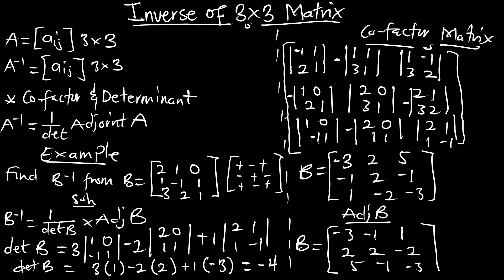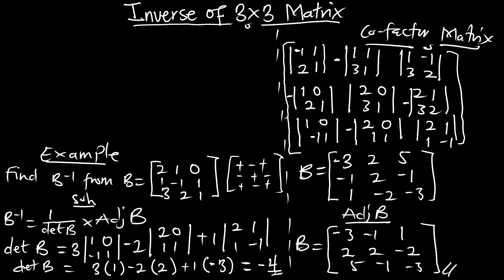So now we have our adjoint matrix, our determinant, and the adjoint. We can then apply the formula which says the inverse of B is going to be 1 over the determinant of B multiplying the adjoint matrix B. B inverse is going to be 1 over the determinant, which is negative 4.